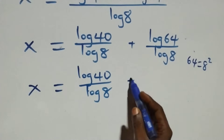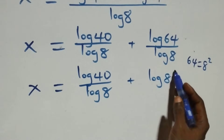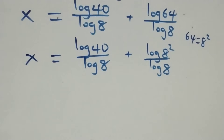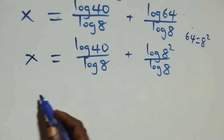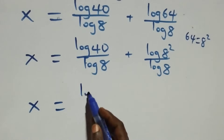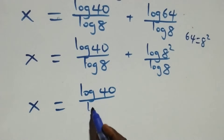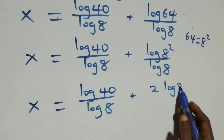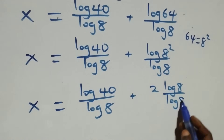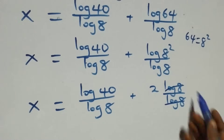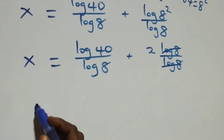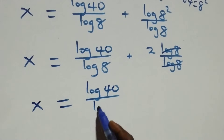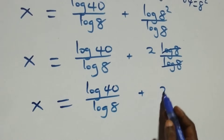Applying the power rule of logarithms, log 64 over log 8 becomes log 8 squared over log 8, which gives 2 log 8 over log 8. The log 8 terms cancel, leaving 2.